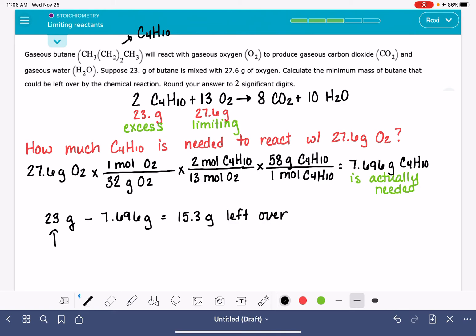So this 23 grams was how much we started with. The 7.696 was how much we needed, which is how much we used. And this quantity right here is what we have left over. It says it wants it to two significant figures. So that should be 15 grams with the decimal point at the end to make Alex happy.